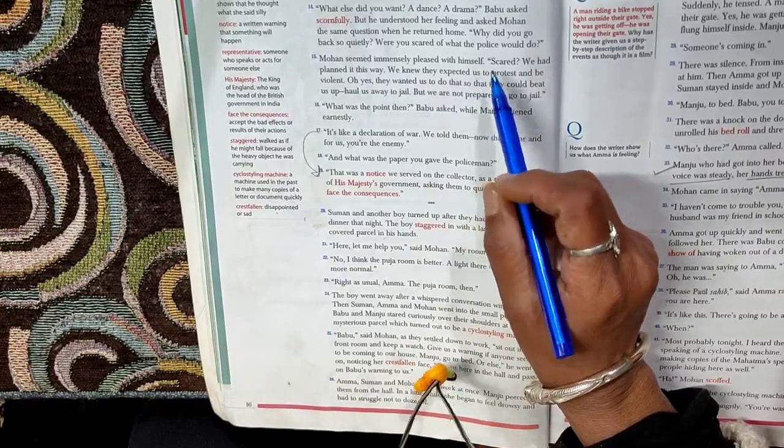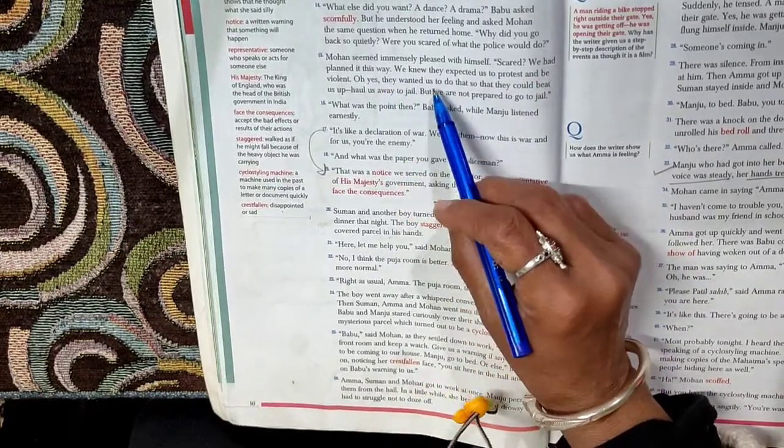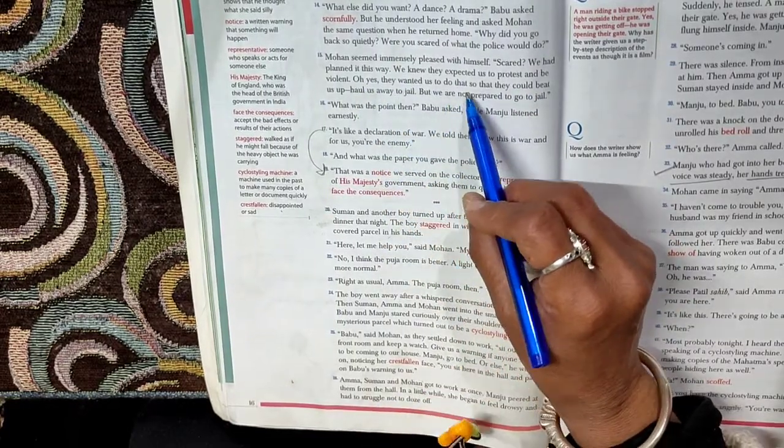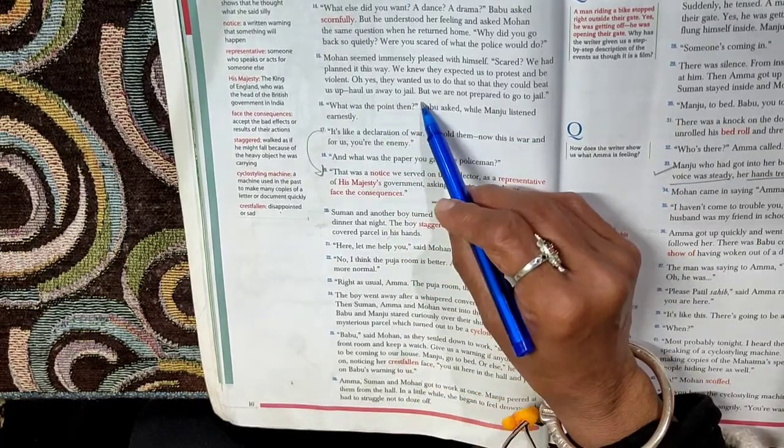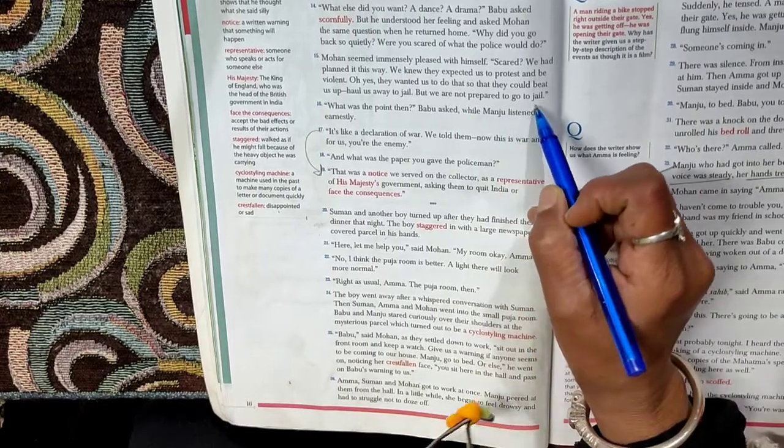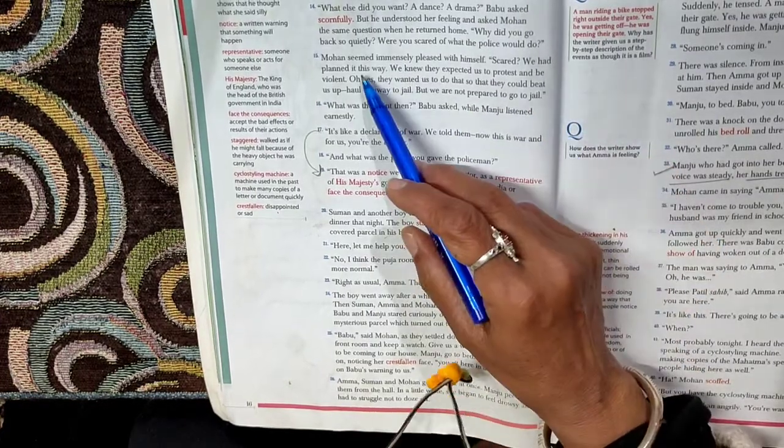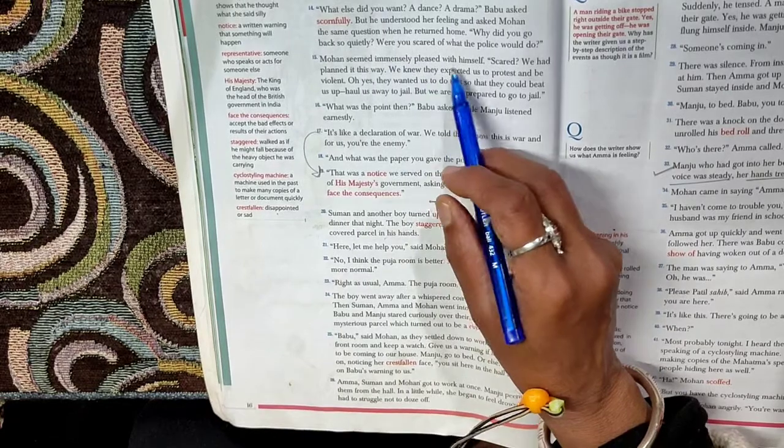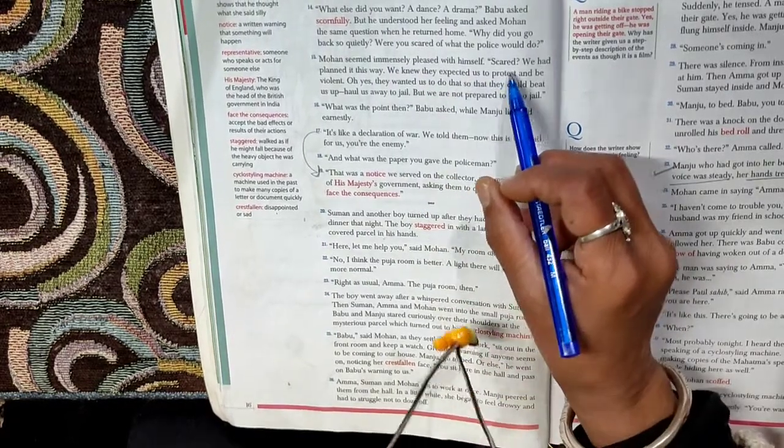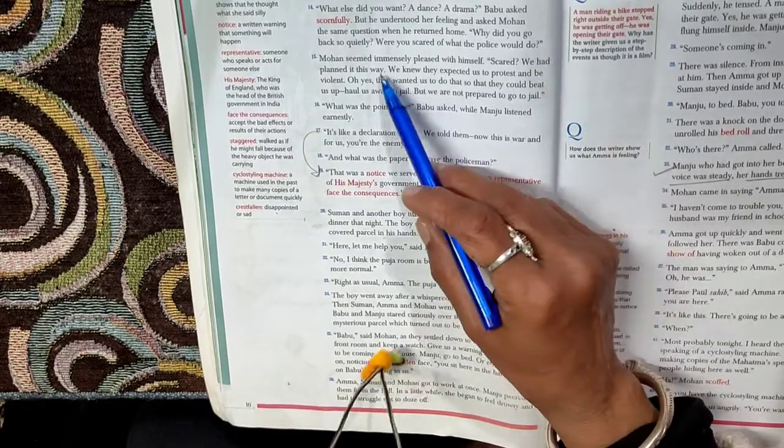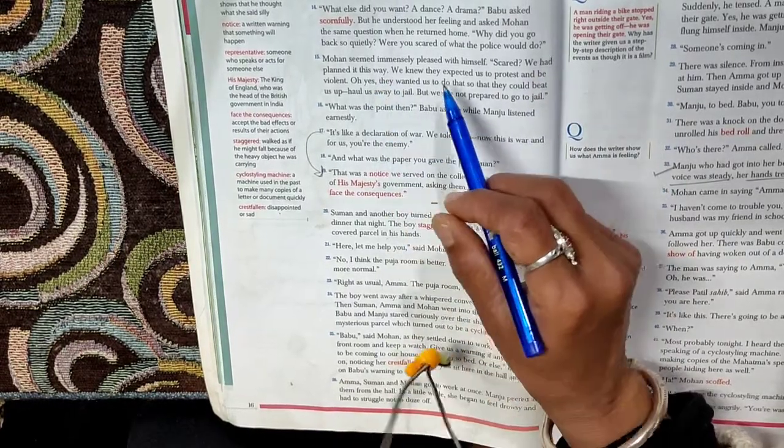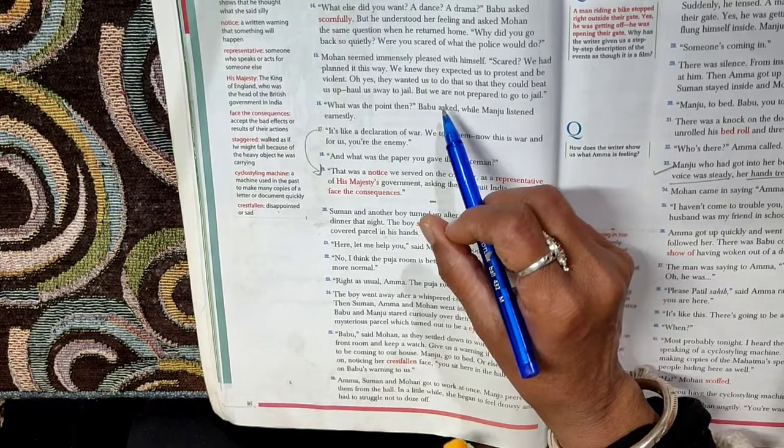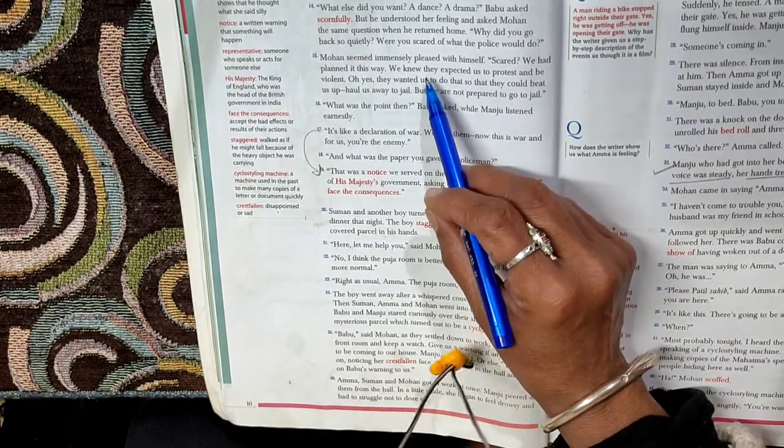Mohan seemed immensely pleased with himself. Now what is the answer Mohan gives? He is very happy, immensely pleased with himself. Immensely means greatly. He says, scared? No, never. This was the way we had planned that we will all go silently, so that they have no chance to catch and put us in jail. So we behaved in a different manner.